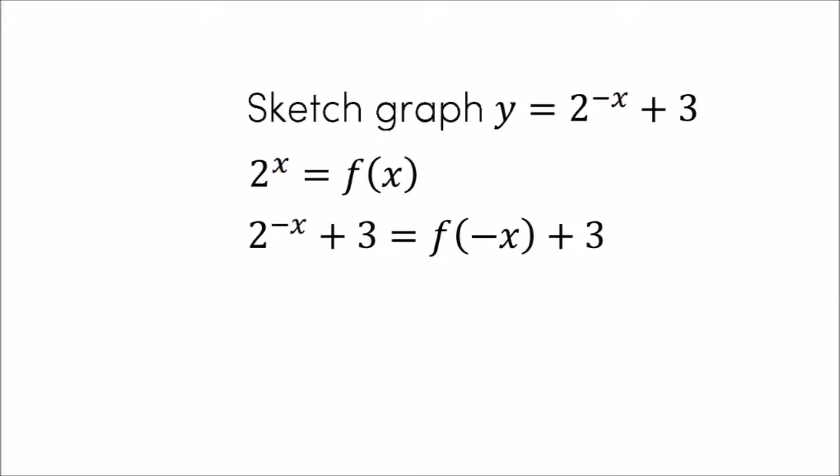Then 2 to the power of minus x plus 3 is f of minus x plus 3. The x in the 2 to the power of x has been replaced with a minus x, so f of x becomes f of minus x. Then you add 3 to the original function.